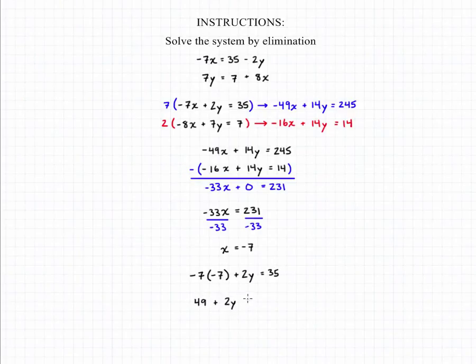That means 49 plus 2y will equal 35 and if we subtract 49 from both sides of the equation we'll end up with 2y is equal to negative 14. We can then divide both sides of the equation by 2 and that will give us our answer for y which is that y equals negative 7 and those two together give us our final answer.